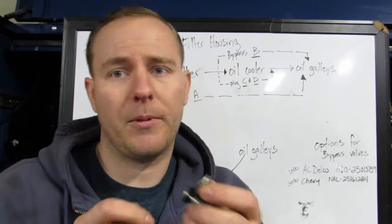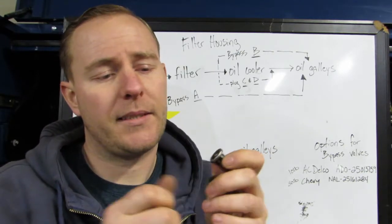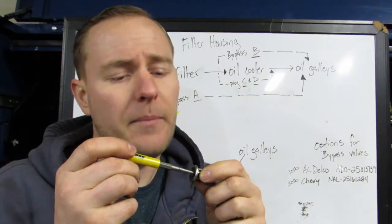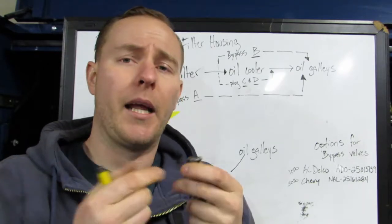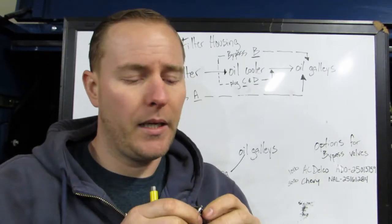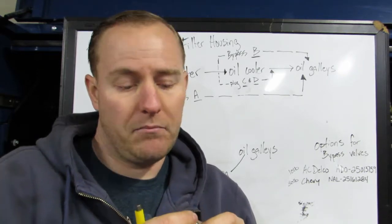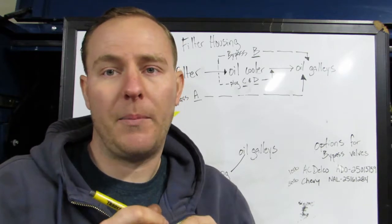These bypass valves are pretty easy to take out. You basically just take a bolt, and you screw it into the, screw it in, and you can pry it out. It takes little to no effort, and when you replace it and put another one in, you're just going to take a socket that fits the outside of this and tap it in gently, and it's pretty straightforward. If you're rebuilding an engine, always change bypass valves.